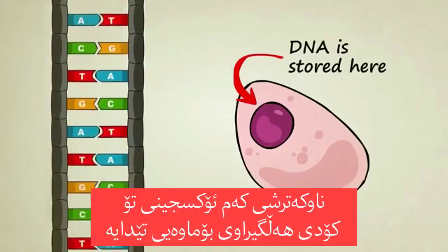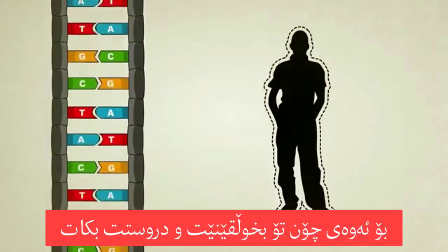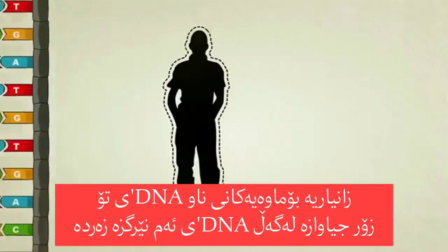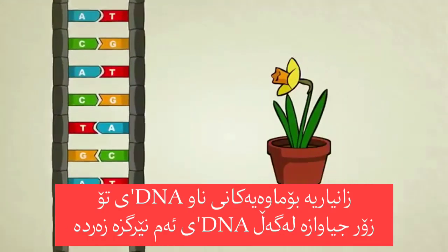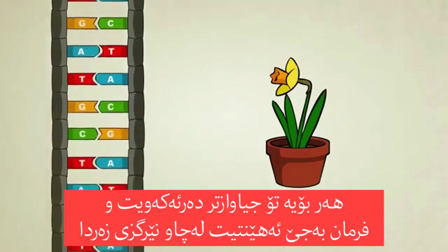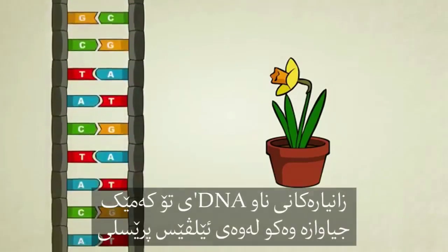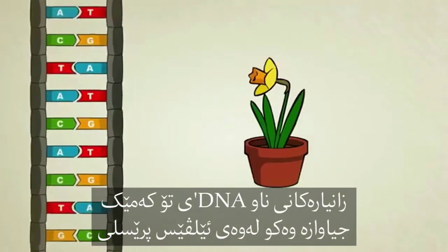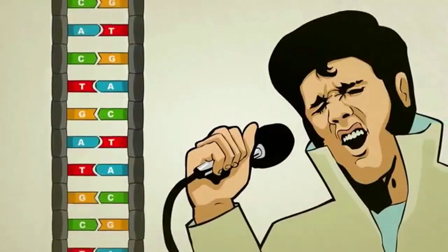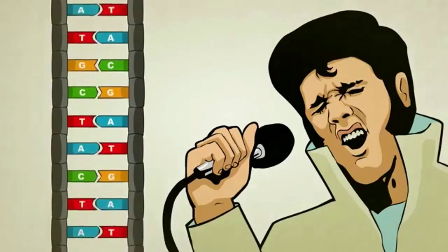Your DNA contains coded information on how to build you. The information in your DNA is different than that of, say, a daffodil's DNA, which is why you look and function differently than a daffodil. The information in your DNA is slightly different than that of Elvis Presley, which is one of many reasons you don't look or act quite like he did.